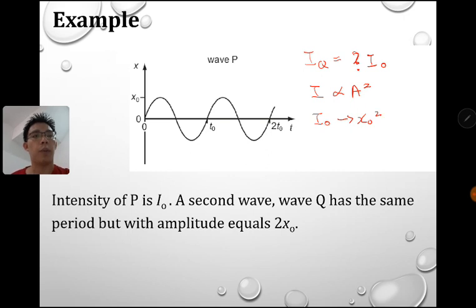For wave P, it is X0 square. And for wave Q, it's IQ, that's what we want to find. And we know that the XQ has 2 times. And then we square that. So if we divide this, we will have I0 divided by IQ and X0 square divided by 2X0 square. So in that sense, we will have IQ equals to 4 times of the I0 because the X0 square cancel. So 2 square is 4.